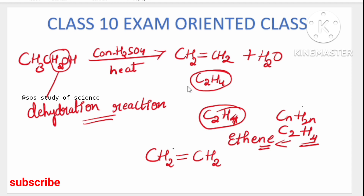The concentrated sulfuric acid acts as a dehydrating agent — it removes the water molecule, and the remaining product is ethene. This conversion of ethanol to ethene is also called a dehydration reaction. It is a very simple and very important reaction to know.